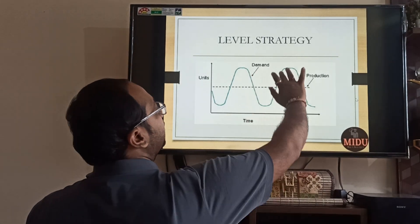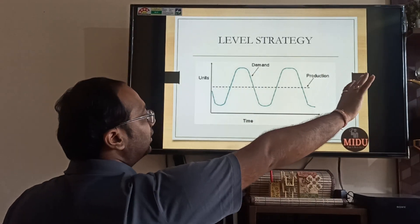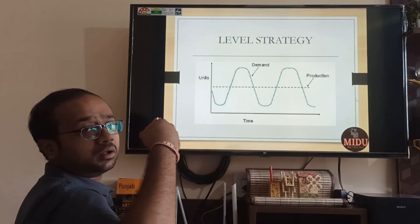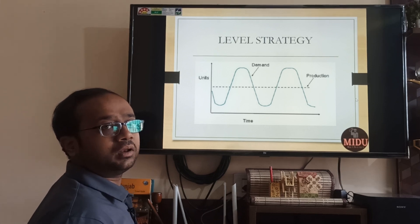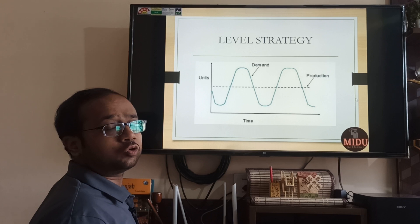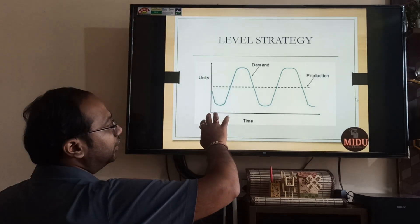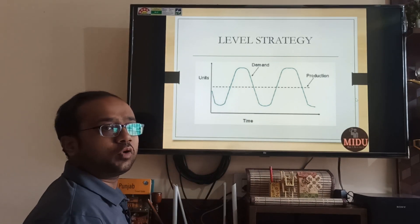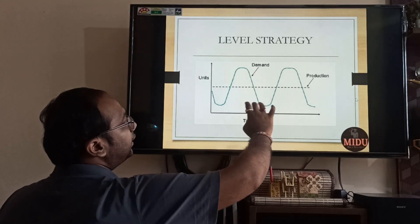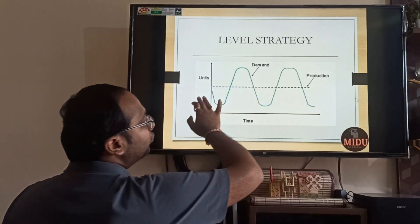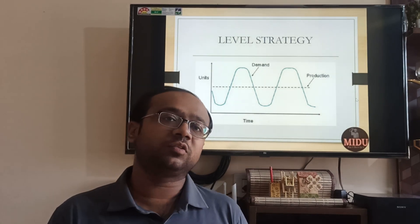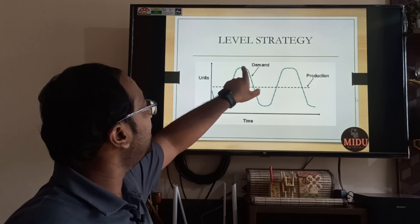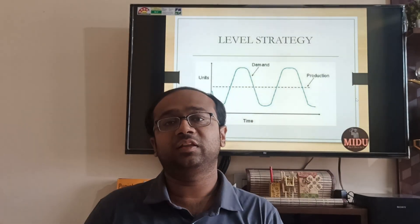So see — demand is fluctuating; it can be a sine curve, it can be a zigzag, anything. But when you plot your units against time — for example, if you are making shirts and it is about 3000 units per month — demand is a fluctuating curve, but production remains constant. So if you are making 1000 units per month, demand is maybe 300 or maybe 2000, but your production remains fixed at 1000.